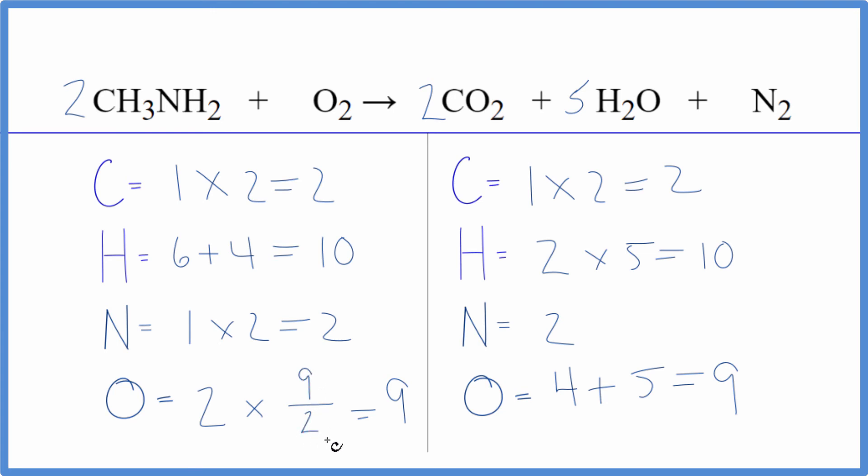Two times nine over two, that would work. If I put nine over two as my coefficient, nine over two times two, the twos cancel out, I have nine. We're done. This equation is balanced. This is the correct ratios, the correct coefficients for each substance.